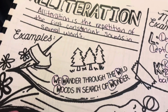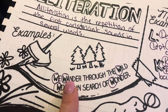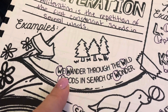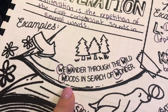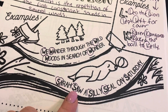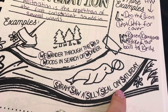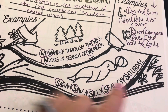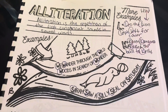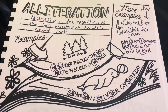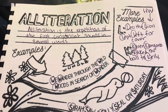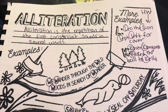Here's an example: 'We wander through the wild woods in search of wonder.' So we, wander, wild, woods, wonder. Here's another one: 'Sarah saw a silly seal on Saturday.' So S-S-S-S-S, right? It's the consonant sounds. You might know 'Sally sold seashells on the seashore.' Maybe you know 'Peter Piper picked a peck of pickled peppers. How many peppers did Peter Piper pick?' That is a fun one.